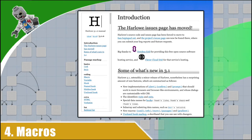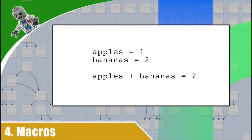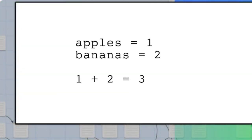Let's take the following: apples equals one, bananas equals two. What is apples plus bananas? The answer is three. You created a variable called 'apples' and assigned it the value of one. You then created a variable called 'bananas' and assigned it a value of two. When you add them together, you replace the variable names with their values. In Harlowe, our variables always start with a dollar sign. This lets Twine know it is working with a variable. To assign a value to a variable, we use the set macro.